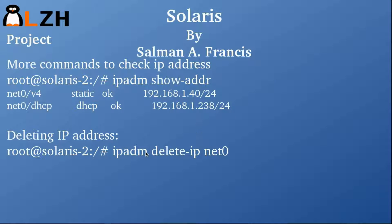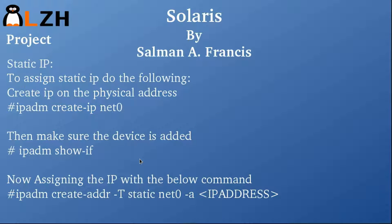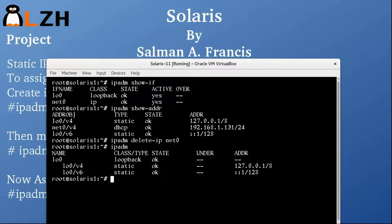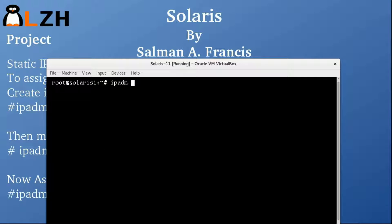Now we are going to delete this IP again because we need to assign our Solaris machine with a static IP. We delete with IPADM delete-IP net0. Run IPADM — everything is gone again. IPADM show-if reveals that only loopback is now available.